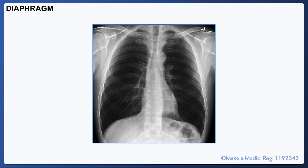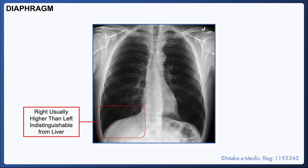With the diaphragm, the right hemidiaphragm is usually slightly higher than the left and it appears continuous with the liver. The costophrenic angles can also be visualized, although inadequate inspiration at the time of the film could make them harder to delineate.